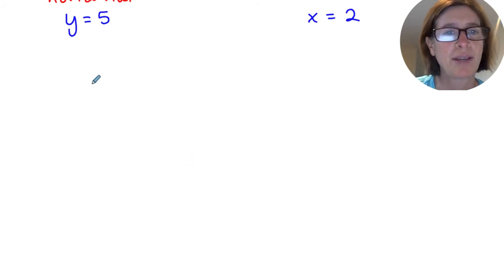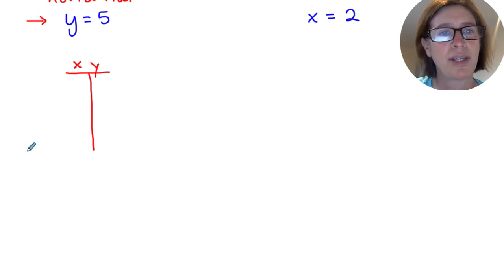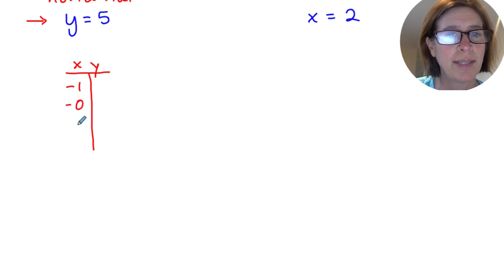So when I look at this horizontal line, if I actually considered it as a table of values, so remember this is a symbolic representation, this would be then a numeric. So if I thought about this, if I took a lot of different points, my y, no matter what, would always be 5.